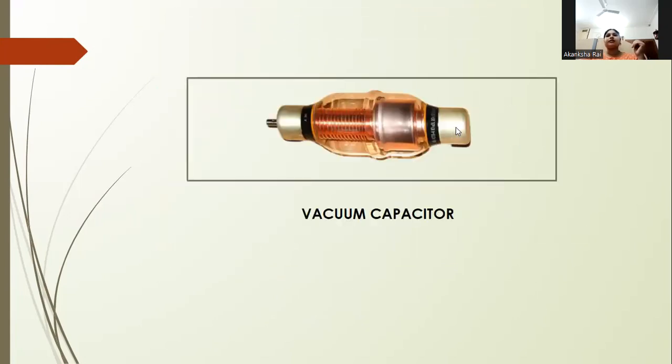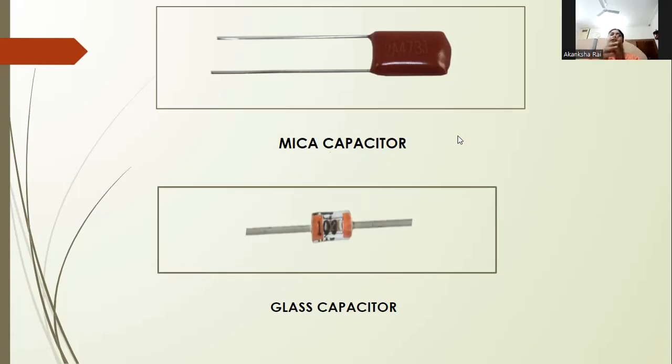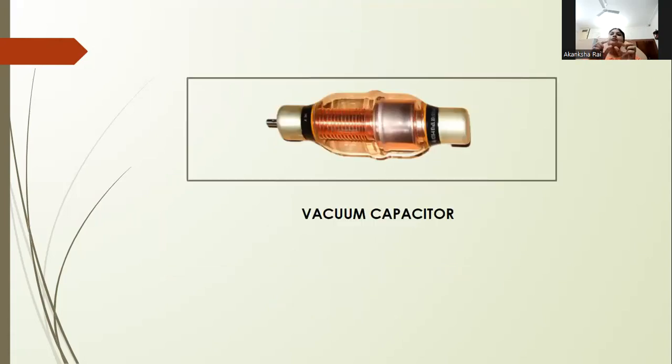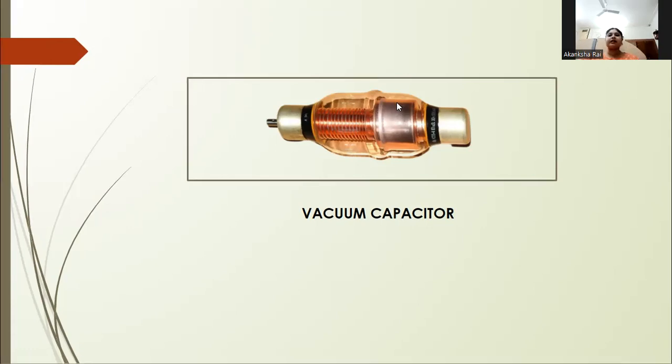Besides this, you have vacuum capacitors and air capacitors. These are not fixed types; they are widely used as variable capacitors. When the dielectric is fixed, they're not very effective. They are widely used where frequency, voltage, and temperature vary in the environment. So vacuum and air are variable types, not fixed. Next, we will discuss variable capacitors.